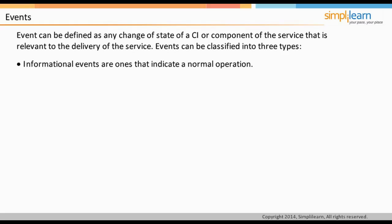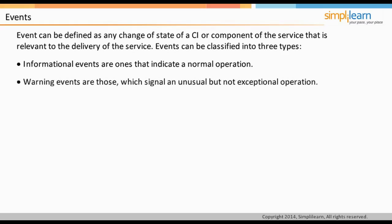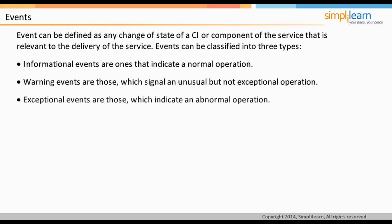Informational events indicate a normal operation — for example, a user logged on to use an application. Warning events signal an unusual but not exceptional operation, providing an indication that the situation requires a little more supervision — for example, utilization of a server's memory reaches within 5% of its highest acceptable level. Exceptional events indicate an abnormal operation — for example, a user tries to log on to an application with an incorrect password.